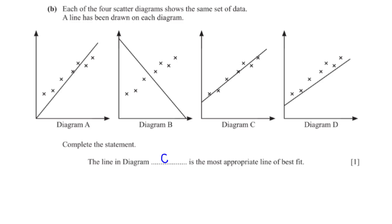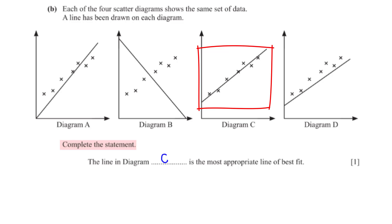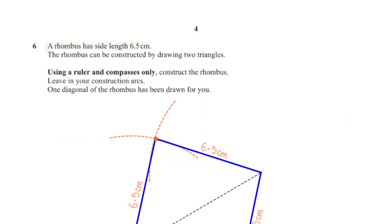Each of the four scatter diagrams shows the same set of data with a line drawn on each diagram. Complete the statements. The general rule of thumb for drawing a line of best fit is that the line must pass through as many points while balancing an equal number of points above and below the line. Based on this criteria, the line in diagram C is the most appropriate line of best fit.